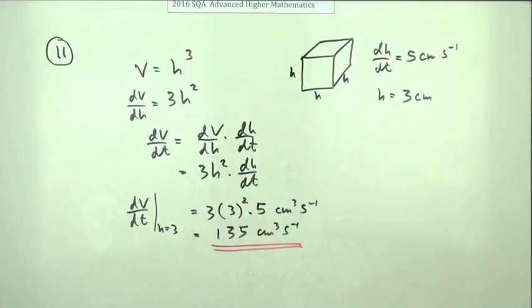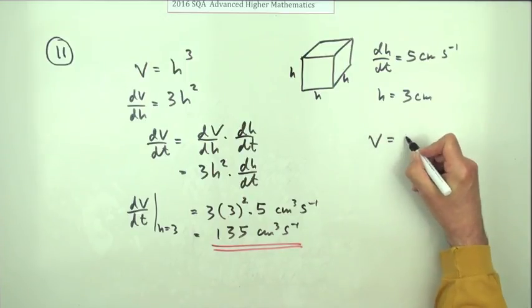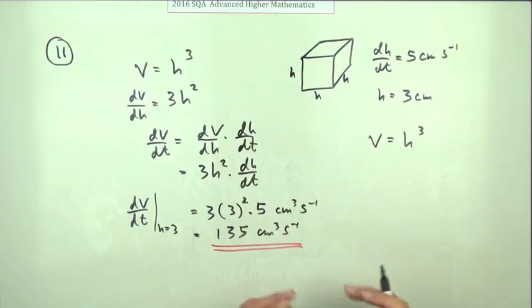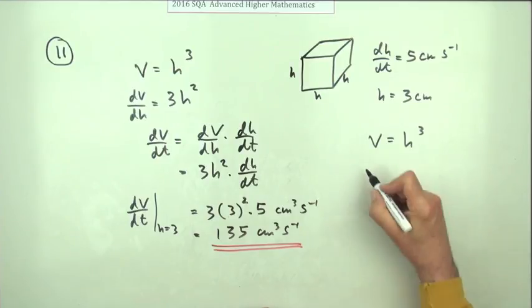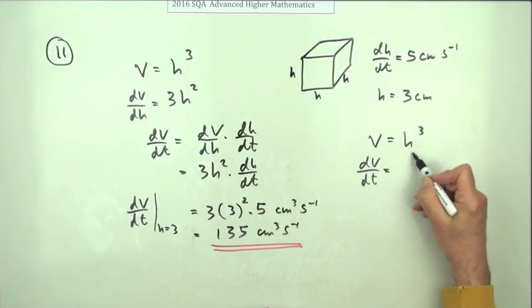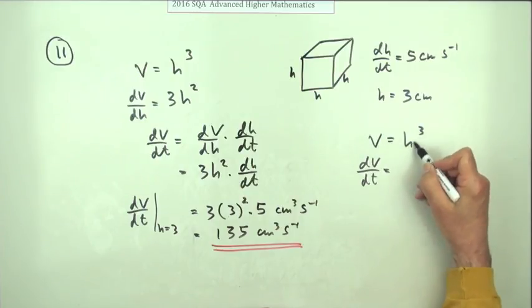That would be the standard way they'd be looking for. Another way would just be to say, well V equals h cubed, and V and h are both functions of time because they're both changing with time. If you differentiate both sides with respect to time...